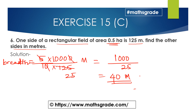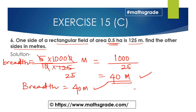The breadth is 40 metres. So the other side of the rectangular field — the breadth — is 40 metres.